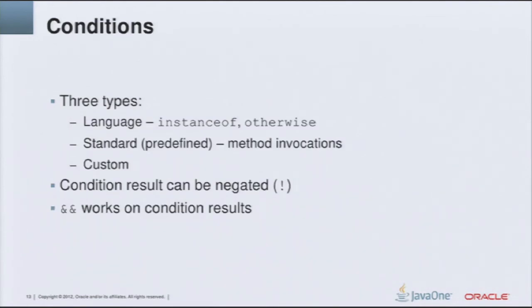Now we have seen that the rule consists of the source pattern, then some conditions, and then some target patterns and conditions. There are basically three types of conditions. The first kind are conditions defined directly by this language — these are the instanceof and otherwise conditions. Then there are some standard conditions also defined by the engine, and then one can define custom conditions — that is why I say it's almost declarative. We can combine conditions with the AND sign, and the combined condition will only be true if all of these conditions are true. We can also negate the result of a condition.